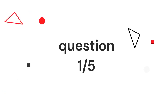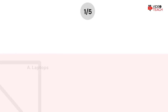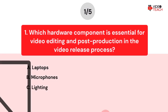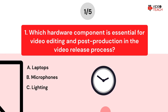Question number one. Which hardware component is essential for video editing and post-production in the video release process? Option A: Laptops. Option B: Microphones. Option C: Lighting. Now you have about 15 seconds to think about your answer.